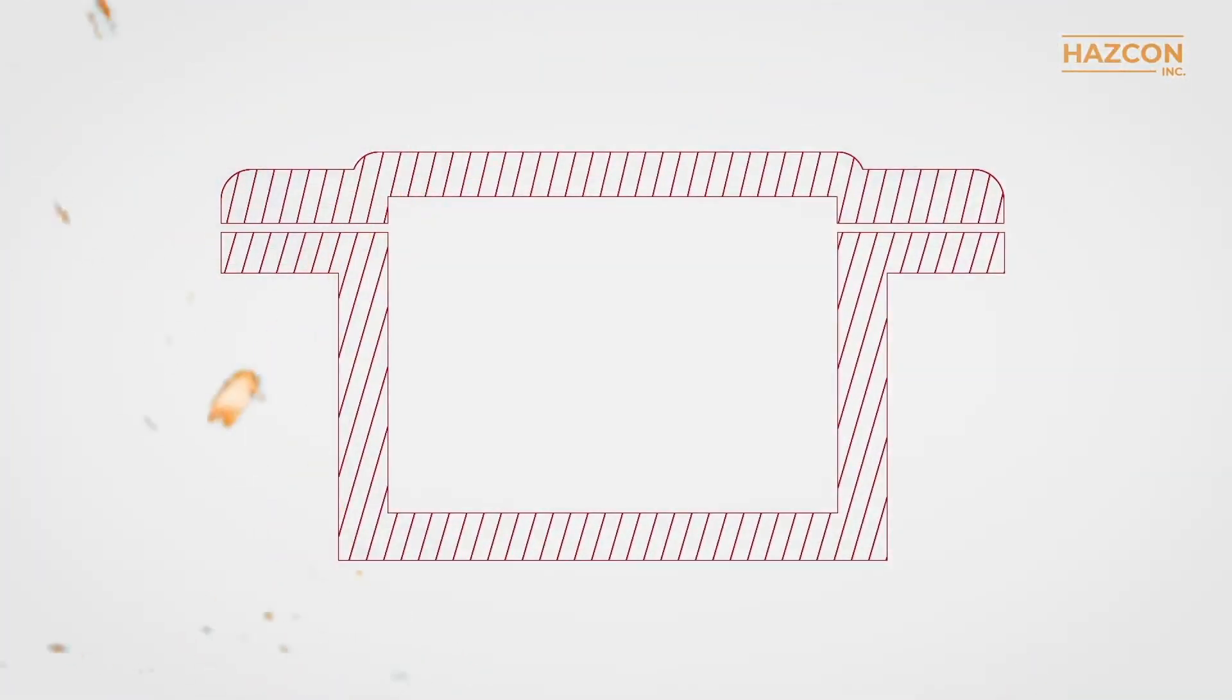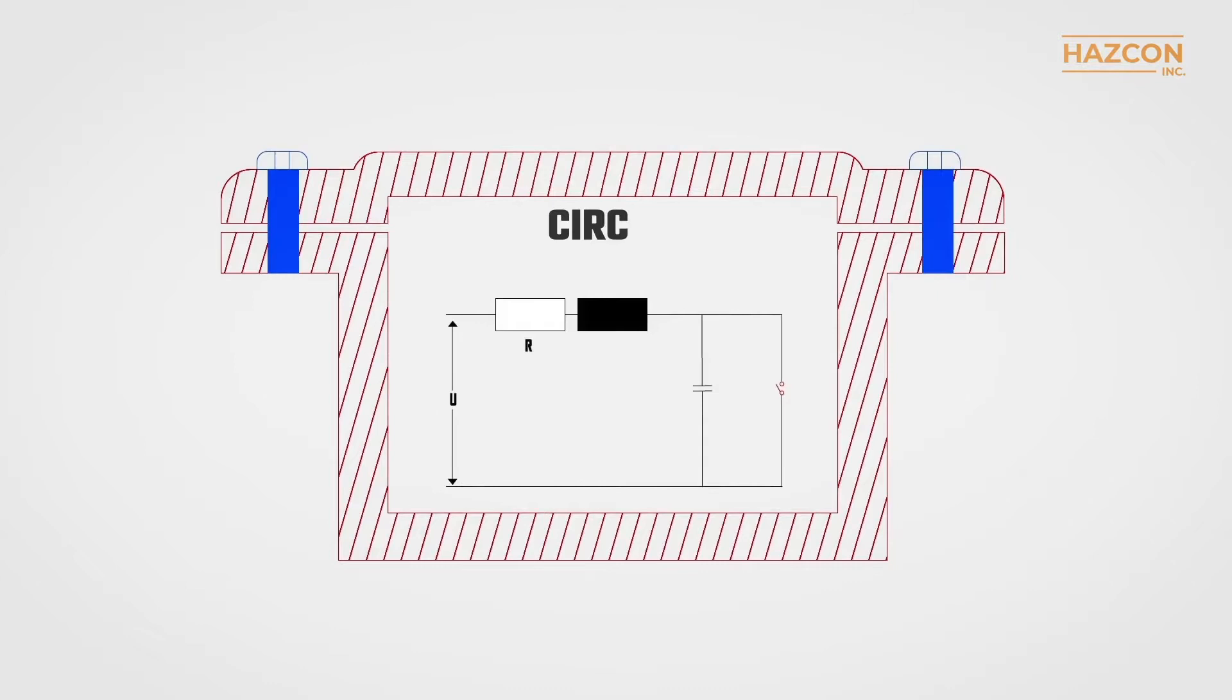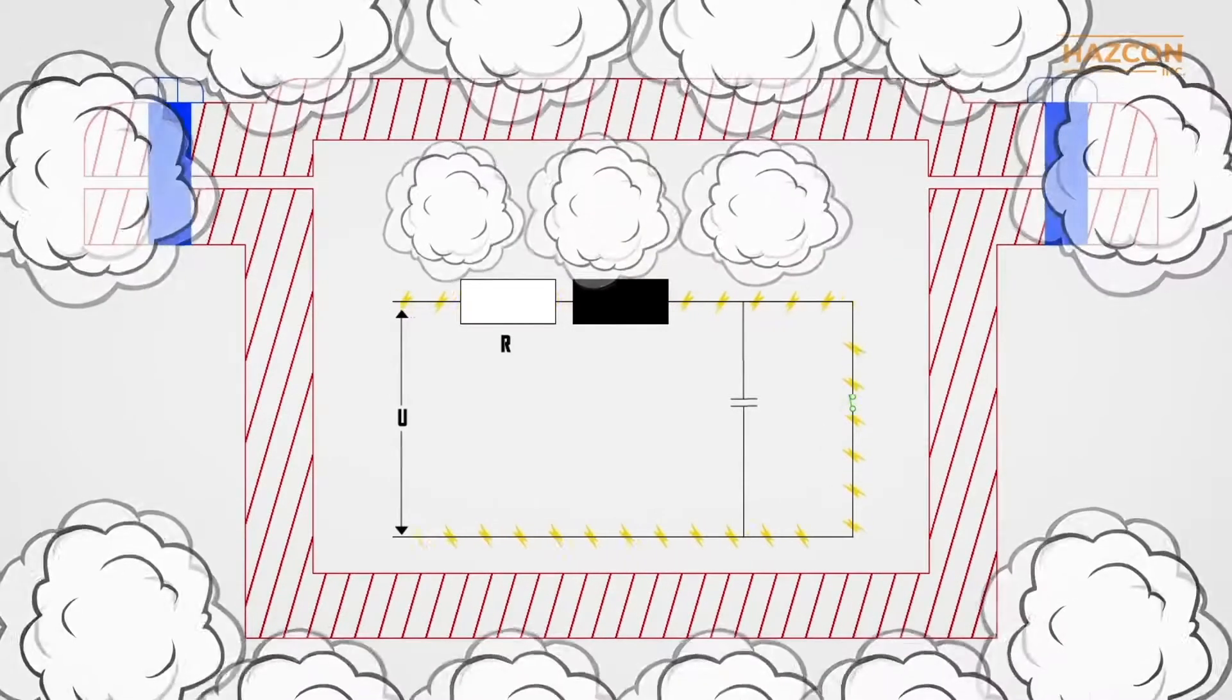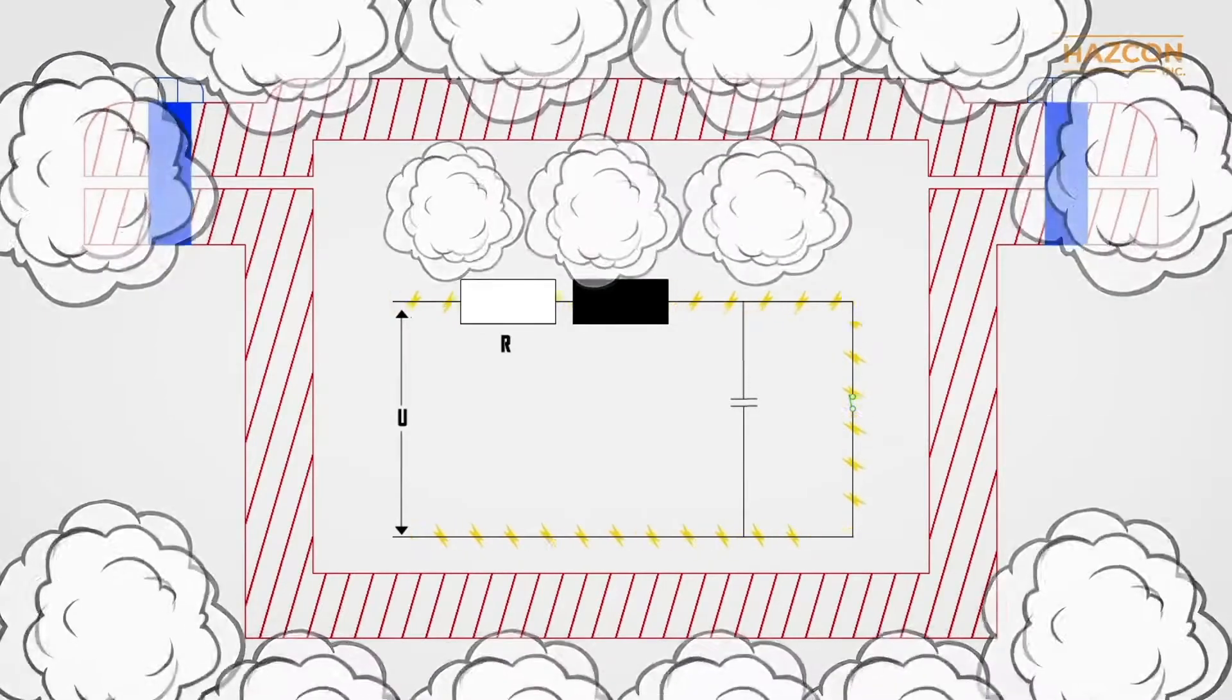One effective way to control or contain such an explosion in hazardous areas is to place the electrical components containing hot surfaces or arcs and sparks inside an explosion-proof enclosure.